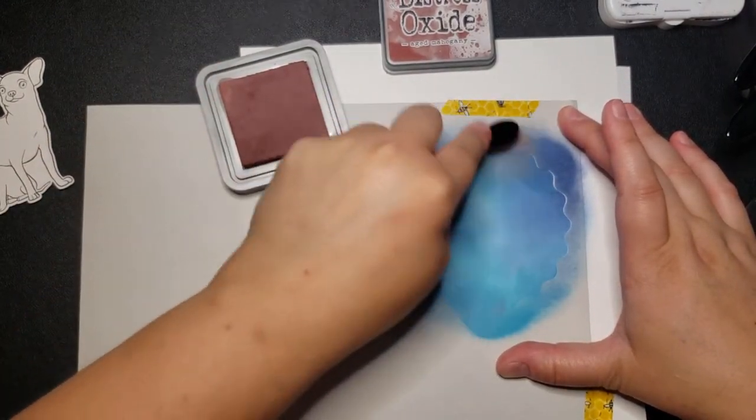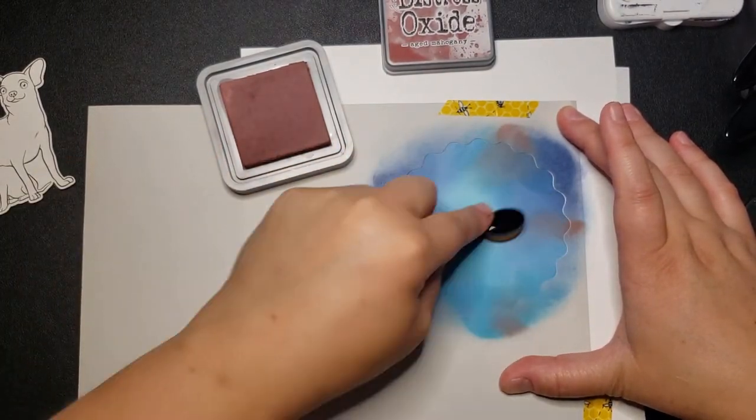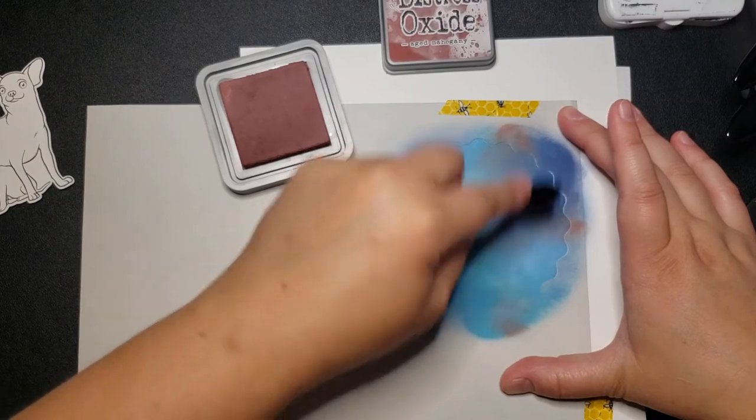So I decided to add a little bit of mahogany to it just to give it a little more tone. It turned into almost like a purple color which looks really pretty on it.